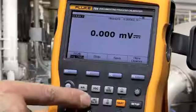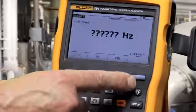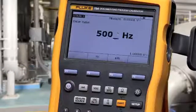To source frequency, select the volts AC frequency button. Set your amplitude. Type in your frequency and press enter.